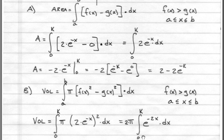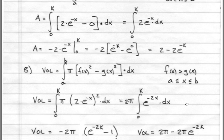We can pull the 2 pi out, integrate from 0 to k of e to the minus 2x dx, and we get the following result.